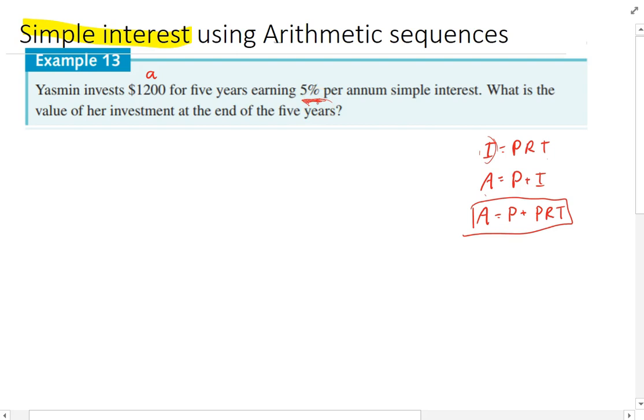So let's work out our common difference here. The common difference is going to be equal to 1,200 times 0.05. That's our simple interest. That's going to be $60.